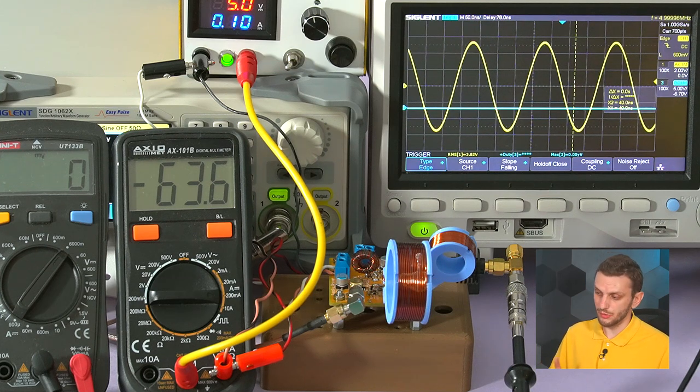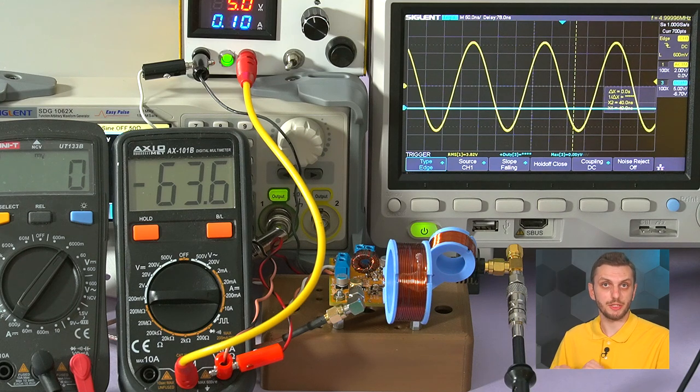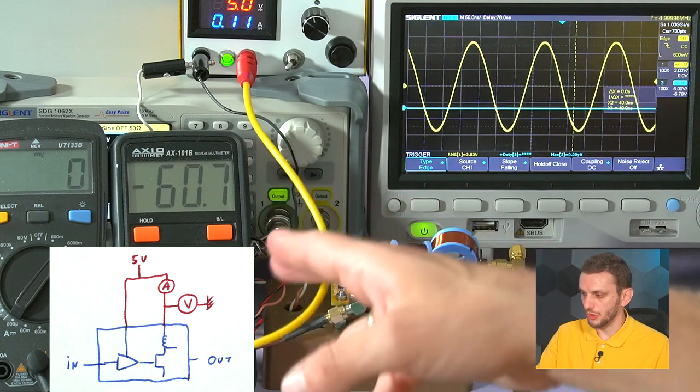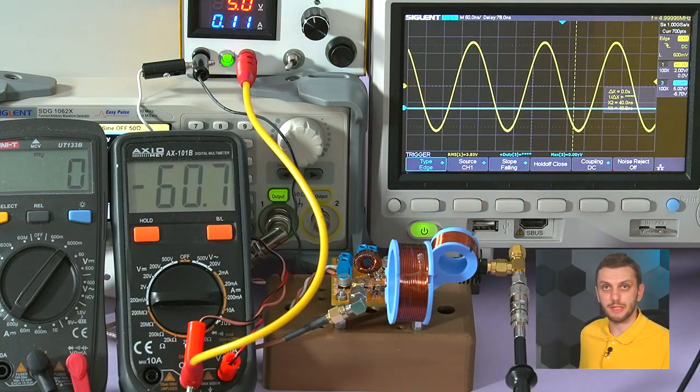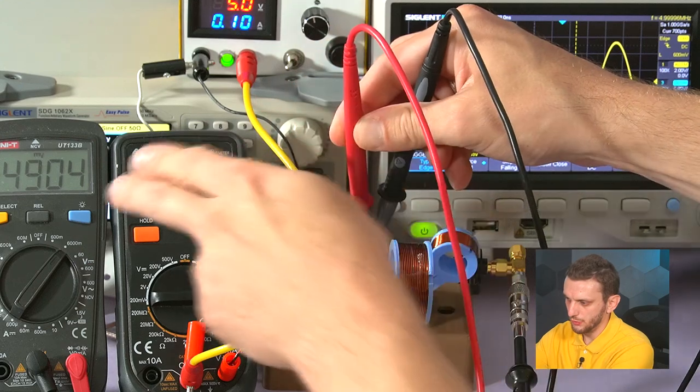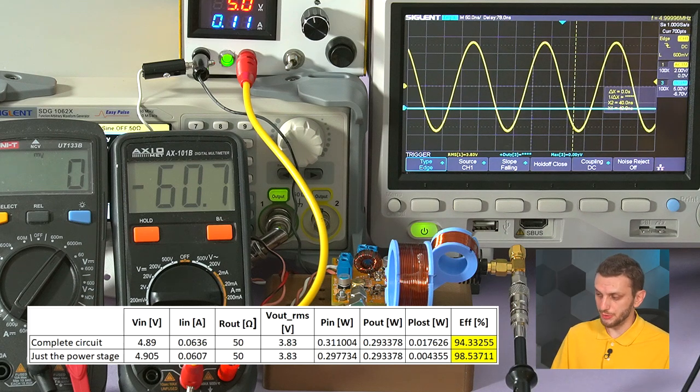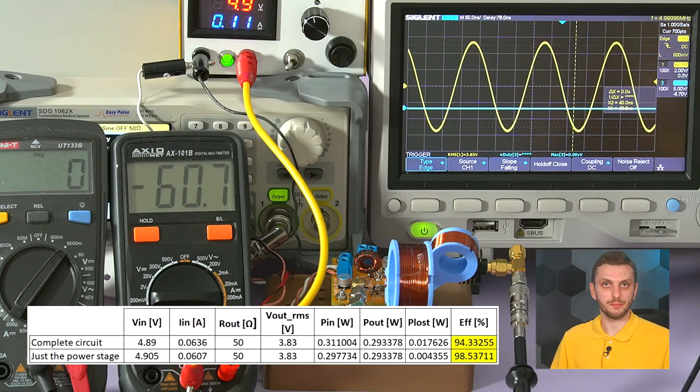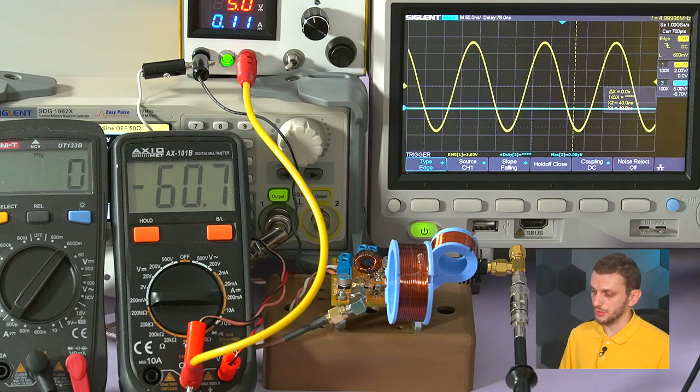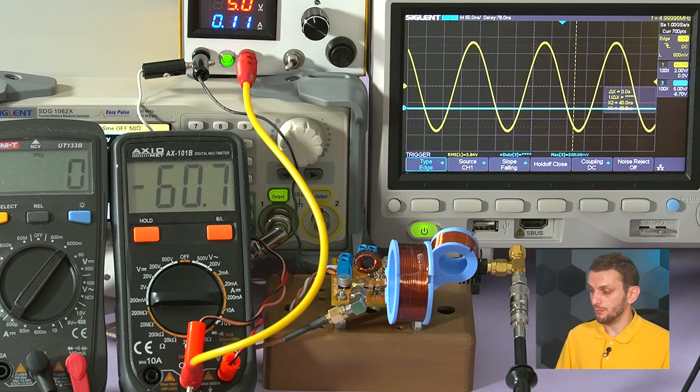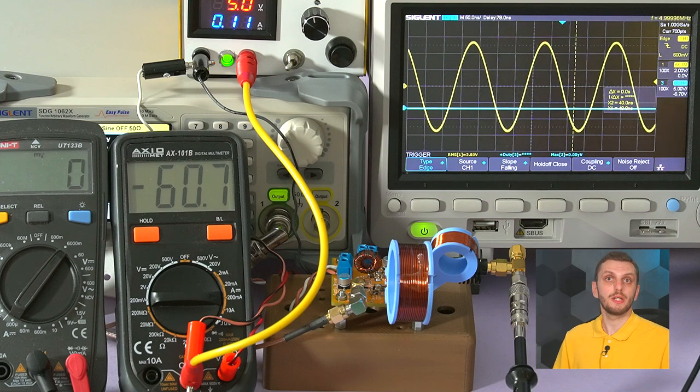And next, we can also measure the efficiency of the power stage by itself, so to exclude the gate driver. So I bypassed the gate driver to be directly supplied. We are now drawing only 60.7 milliamps, and the supply voltage is around 4.905, so the efficiency of the power stage by itself is around 98%. So as long as you're taking care of the various parasitics, and take every measure possible to reduce these to a minimum, the class E amplifier can be made to be extremely efficient, and you can get fairly good results with it.